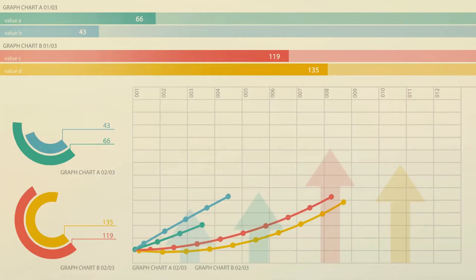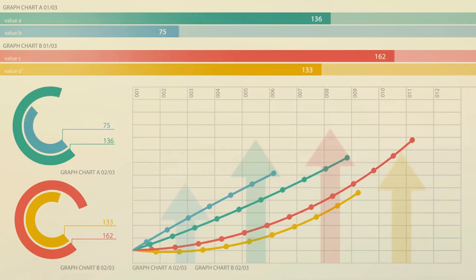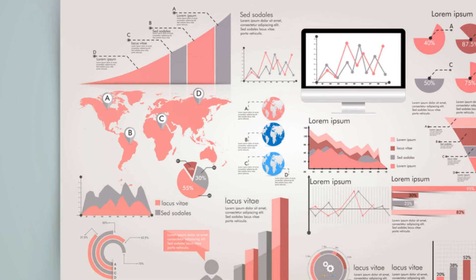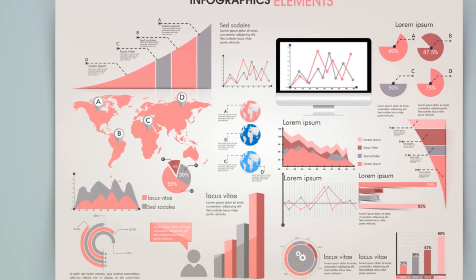We've journeyed through skewness, revealing the asymmetry in data, and kurtosis, the telltale sign of outliers. These tools not only enhance data interpretation but also influence decisions across various domains.